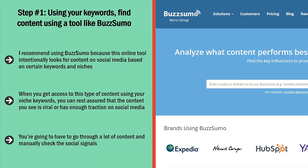It then ranks this material based on their social engagement levels. When you get access to this type of content using your niche keywords, you can rest assured that the content you see is viral or has enough traction on social media. You don't have to use BuzzSumo — there are other similar tools out there. Regardless, you need to use that kind of tool.